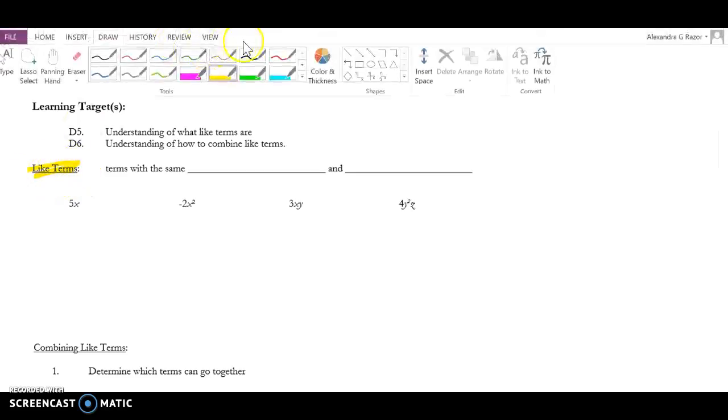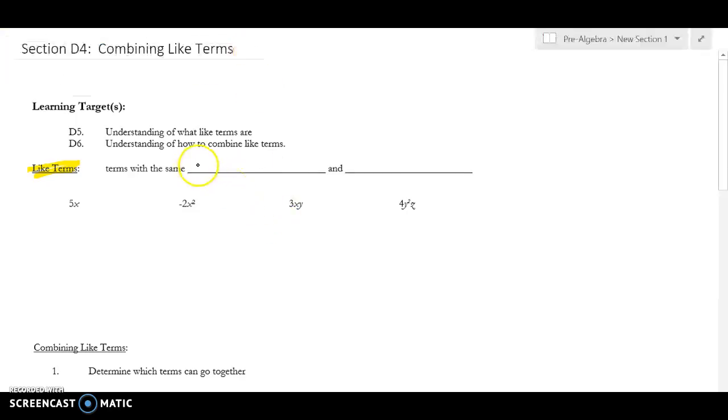Like terms are terms with the same variables and exponents. So down below we have some things and what we want to do is list some like terms. What it has to have is it must have an x with it. My term has an x, so all my like terms also have to have an x.